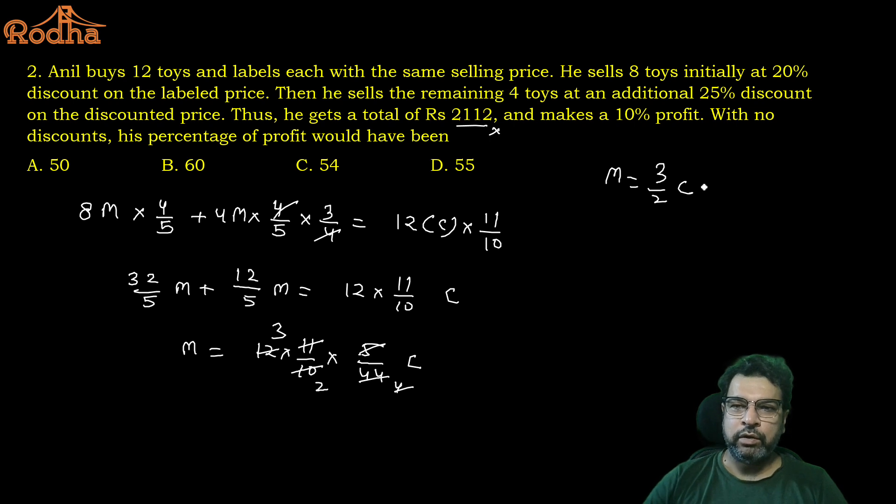So basically this is 44 by 5, so when you solve M is equal to 12 into 11 by 10 into 5 by 44 of C. Now cancel out, 11 times 4, 5 times 2, 4 times 3, so basically you are getting M is equal to 3 by 2 C. So if there is no discount, your cost is C, mark price is M, which is equivalent to selling price. Your markup is 1.5. So in a way, your profit would be 50% only. That's your answer. Clear, short approach, use one step only.